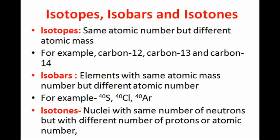Two nuclides are isotones if they have the same neutron number N, but different proton number Z. For example, boron-12 and carbon-13 nuclides both contain 7 neutrons, and so are isotones.